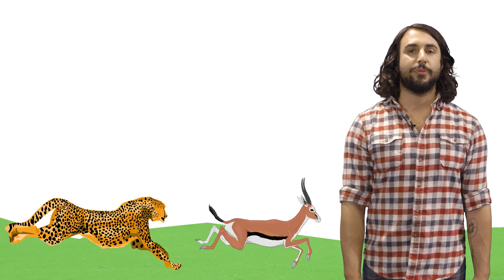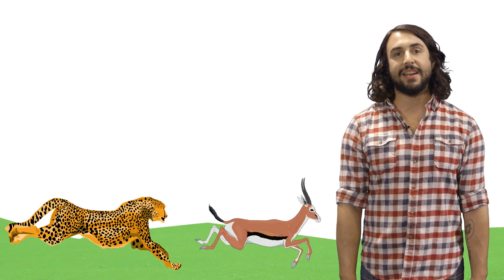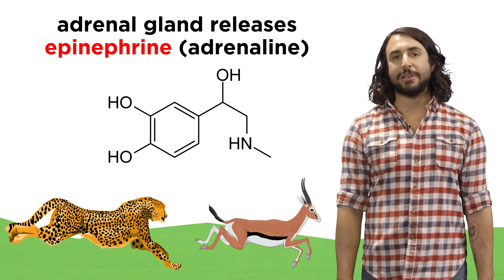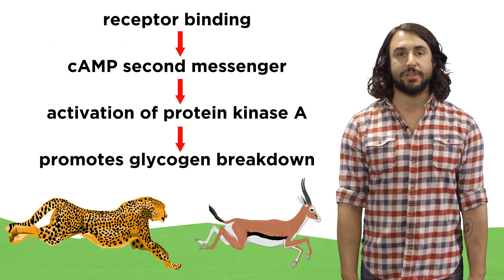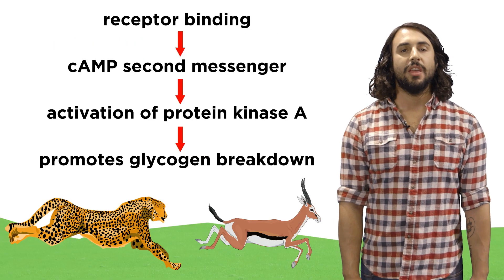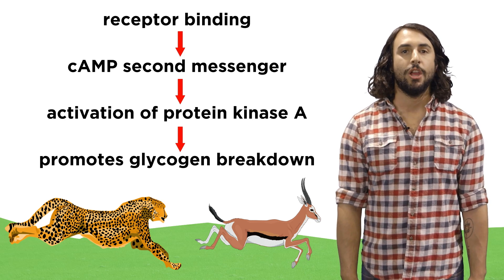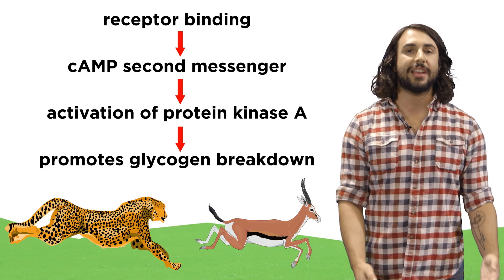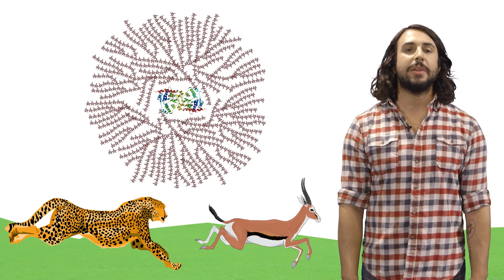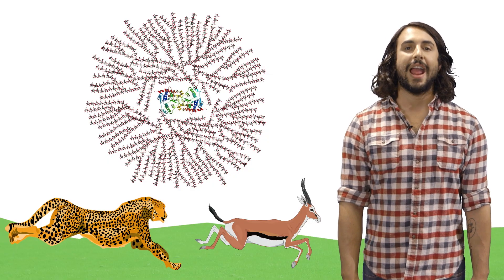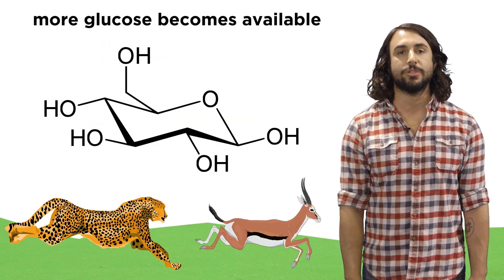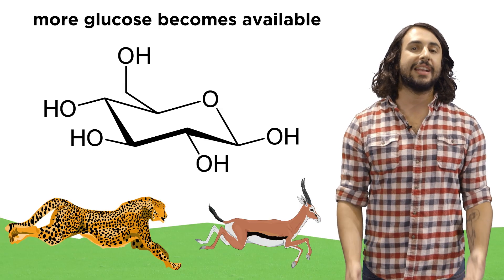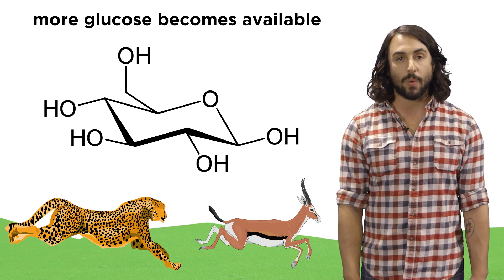For example, when an organism finds itself in a particularly stressful situation, like evading a predator, the adrenal glands secrete a hormone called epinephrine — more commonly known as adrenaline. When this molecule reaches liver cells, it binds to a membrane receptor. This sets off a cascade of events which generates cAMP, which in turn activates an enzyme called protein kinase A. This enzyme will inhibit glycogen synthesis and promote glycogen breakdown, meaning the cell will stop storing glucose as glycogen and will instead start breaking up glycogen to make more glucose molecules, which will enter the bloodstream and become available for cellular respiration. Essentially it kicks energy production into overdrive, so that the organism can get away from the predator.